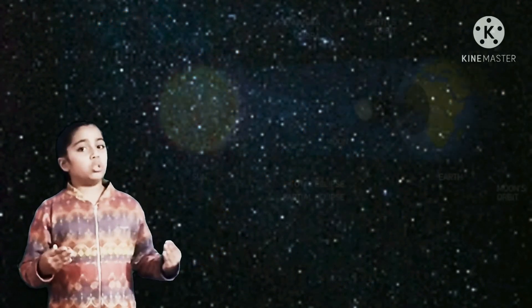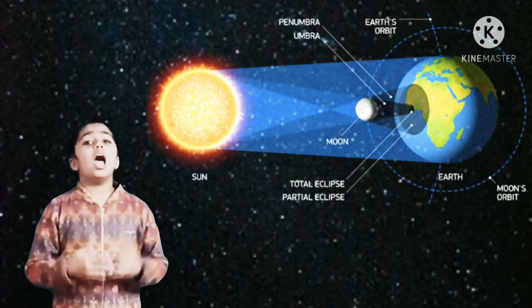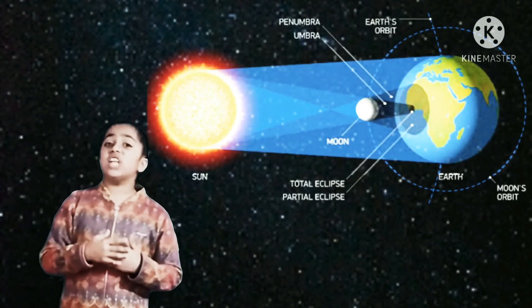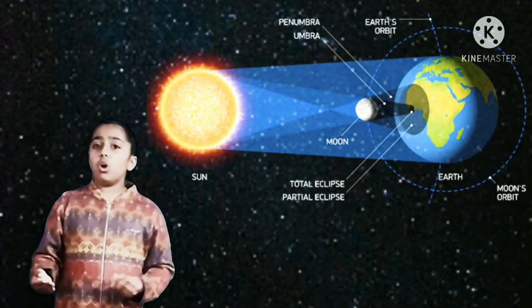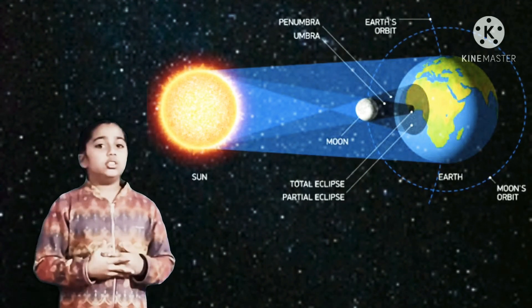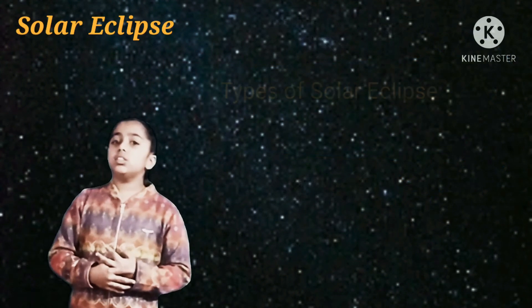When the moon comes between the sun and the earth, the moon blocks all the sunlight and the shadow of the moon falls on some part of the earth. This is called solar eclipse. This is of two types: partial solar eclipse and total solar eclipse.